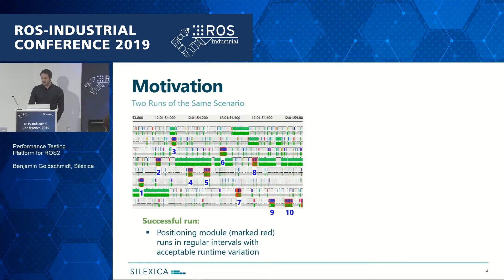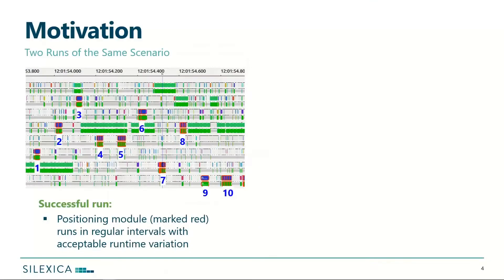What you can see here is a trace run when everything is going right. On the x-axis you have the time, and on the y-axis you have the active processes. In red I have marked the positioning module of that scenario. For this successful run, everything seems to be running quite regularly — the first iteration, second iteration, third iteration — all roughly the same amount of time and in the same time interval.